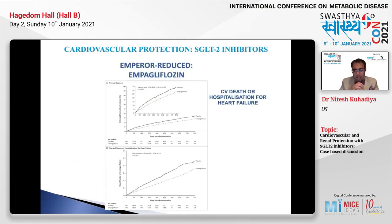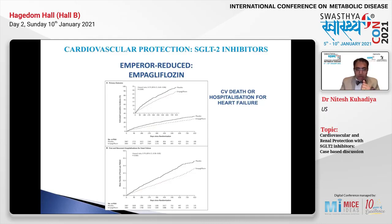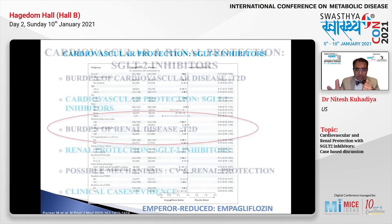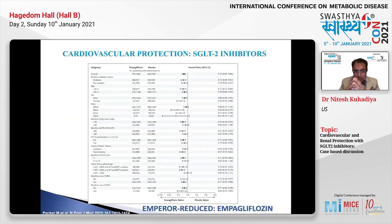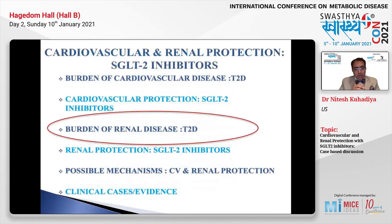The EMPEROR trial was done in patients with heart failure using empagliflozin. Apart from a few differences, it was very similar to DAPA-HF and showed very similar benefit in terms of reducing CV death or hospitalization for heart failure. This was seen across all subgroups irrespective of age, gender, race, baseline ejection fraction, and cause of heart failure.